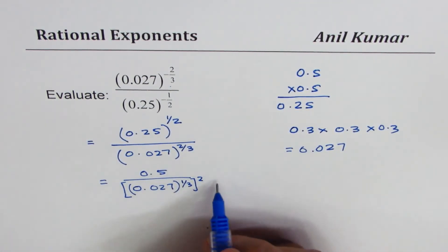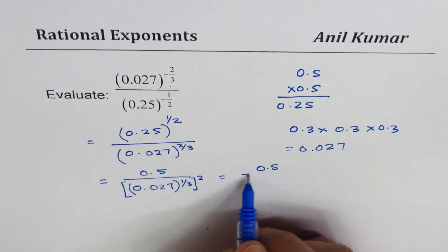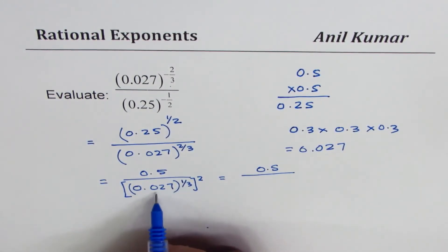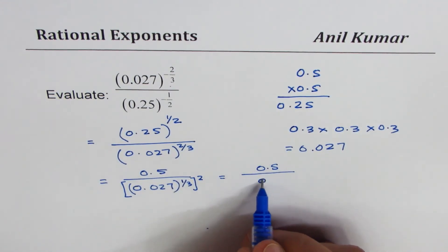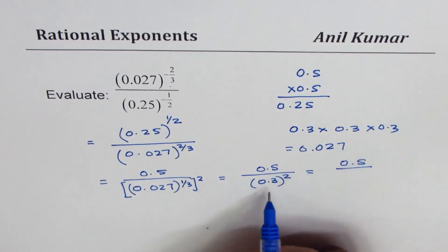First step I have already shown you here. We could write this as 0.5 divided by, cube root is 0.3, (0.3) squared. Now that gives you 0.5 divided by 0.3 squared, which is how much?